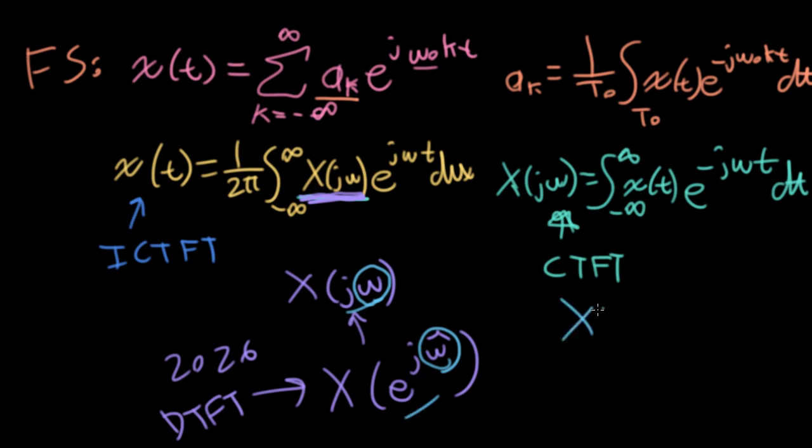Later in the class, when we look at Laplace transforms, we'll see that if you take a Laplace transform that is a function of a complex variable S and evaluate at j omega, you get the Fourier transform. If this Fourier transform exists and if the imaginary axis here is within the region of convergence of the Laplace transform, that's a whole other story we'll cover later in the course. Just as in 2026, we saw that if you took the z transform and plugged in e to the j omega hat, you'll get the discrete time Fourier transform.